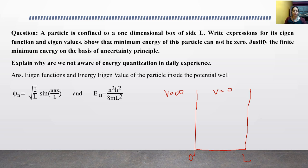The wave function is ψ_n equals root 2 by L sin nπx upon L, and the energy function is E_n equal to n squared h squared upon 8mL squared. We have already solved this problem in Schrodinger equation.